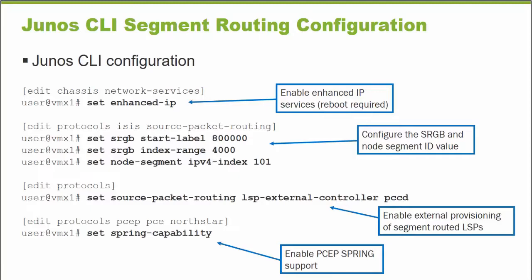The protocol we're going to use for this example is ISIS as the IGP. Under the edit protocols ISIS branch — remember, this is segment routing, we don't use RSVP or LDP to distribute any labels. We use the IGP to distribute the adjacency SIDs and the node SIDs that we will, in an MPLS forwarding plane, use for the labels. Under this branch, we're going to configure the segment routing global block.